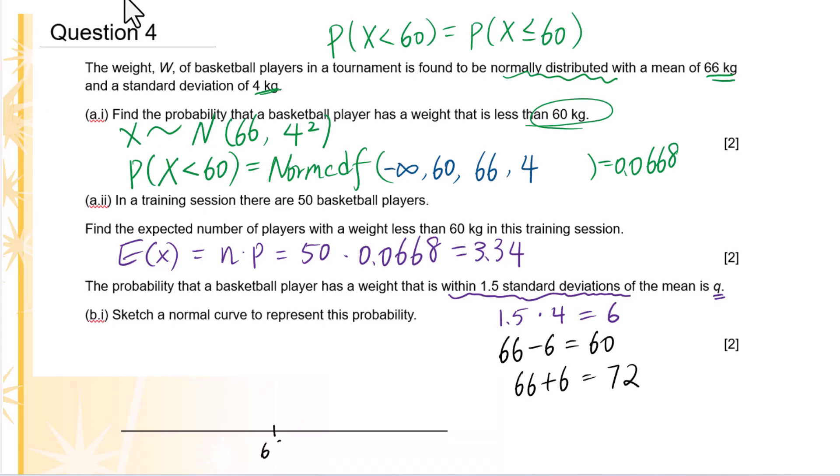Mean 66. Three equal segments on the left side and also on the right side. The standard deviation is 4: 70, 74, 78, minus 4 is 62, 58, 54. Then sketch this bell curve.